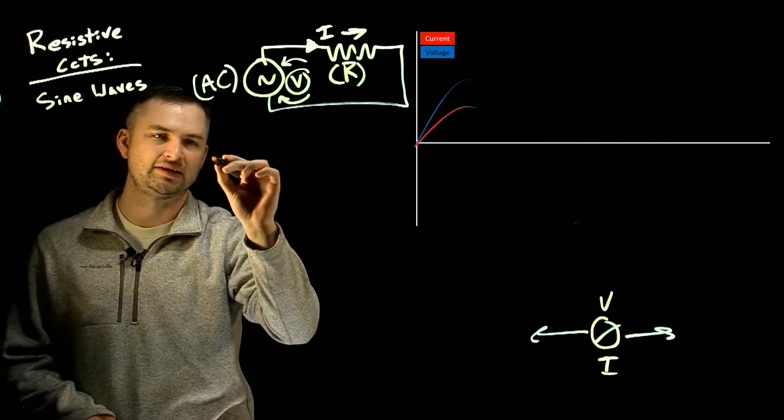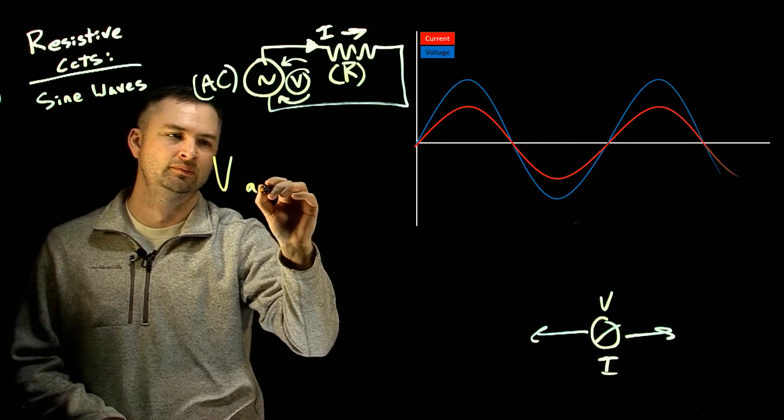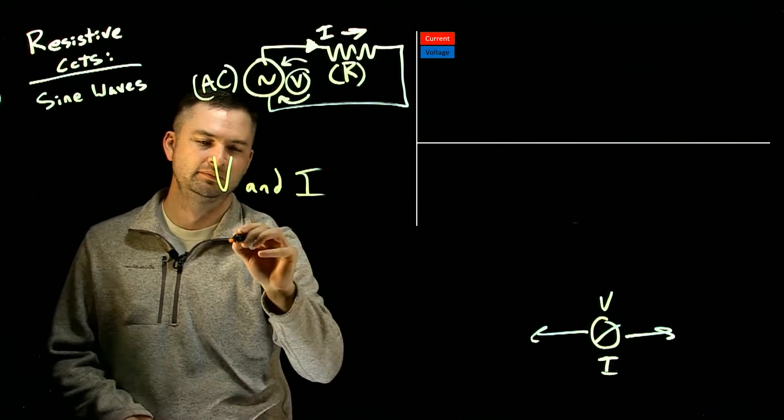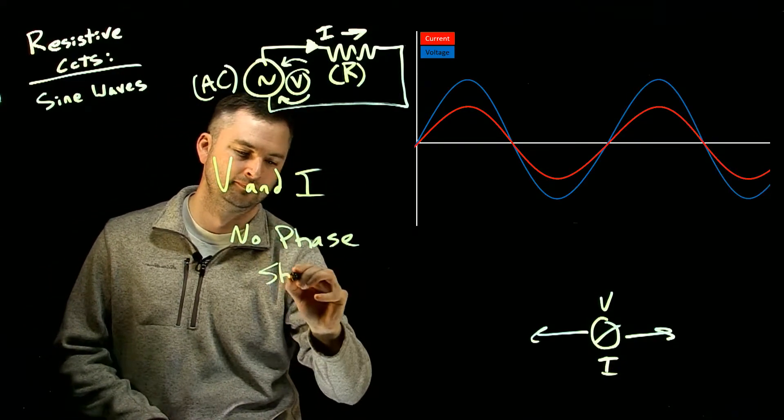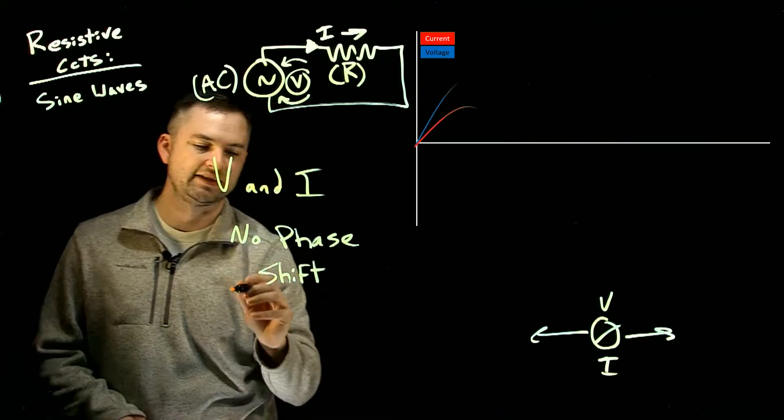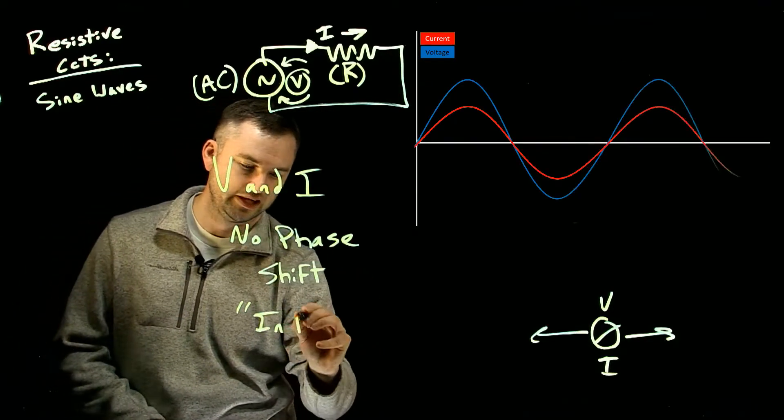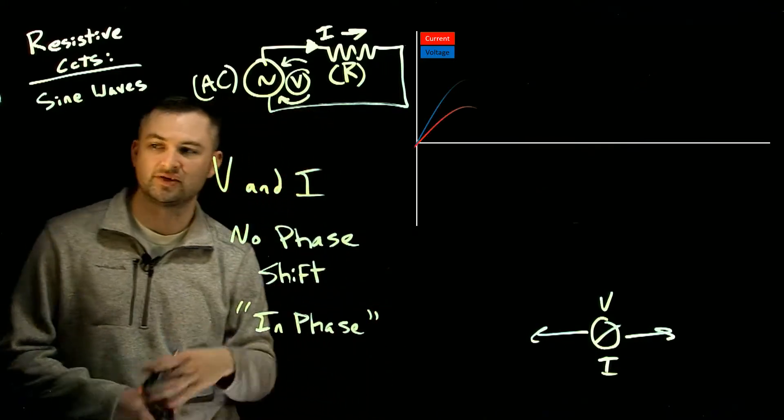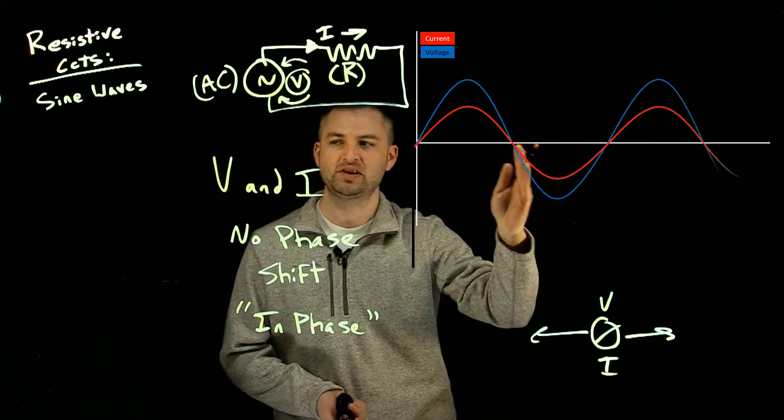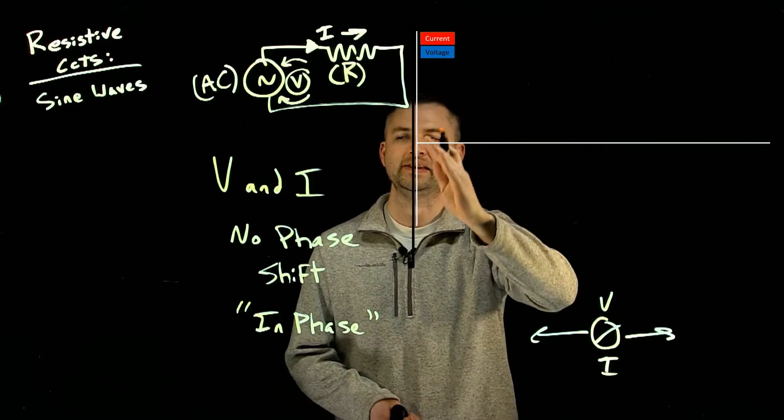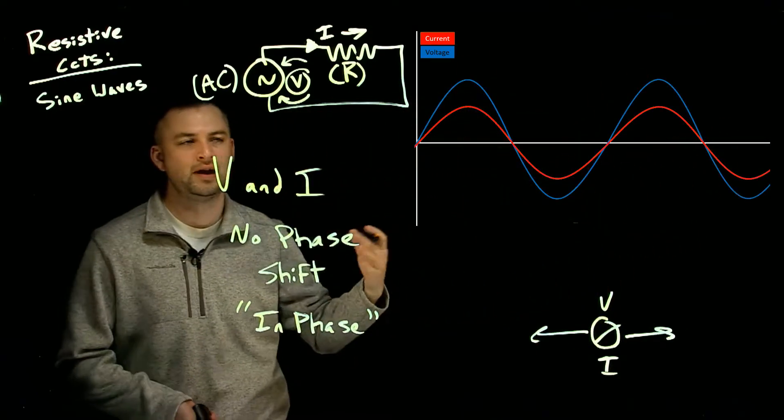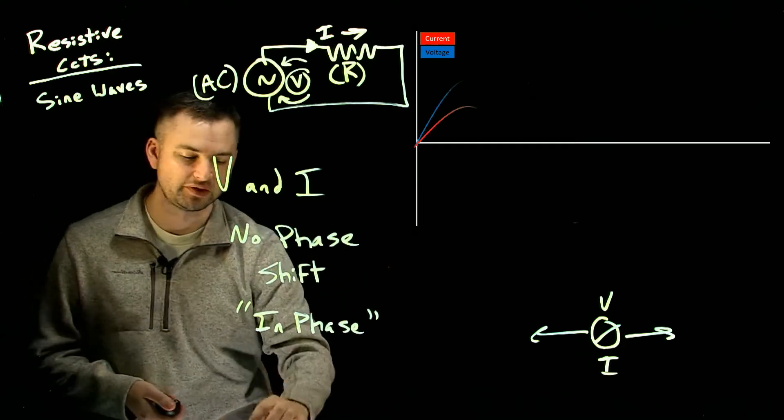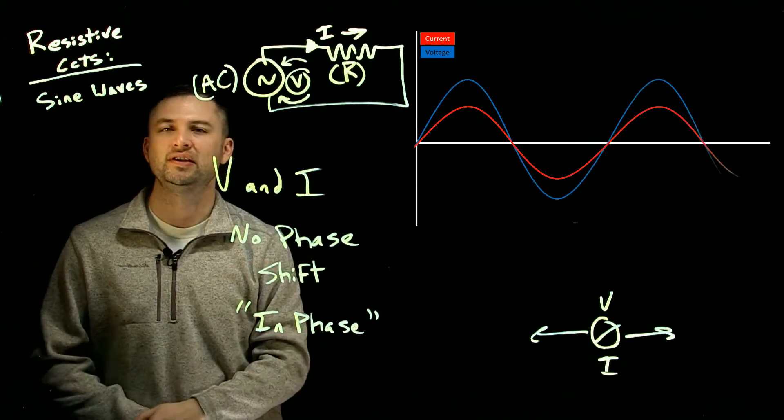So just to state it, between voltage and current, there is no phase shift. You could say that they are in phase with each other. Voltage and current are in phase with each other, and that's exactly what we're seeing here. The two sine waves are running along with each other, and there's no left to right shift between their peaks or where they're starting or stopping.